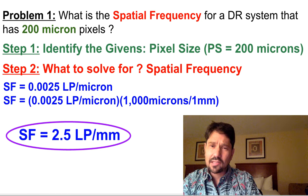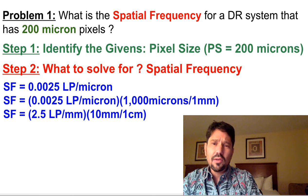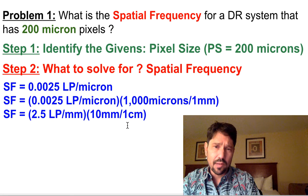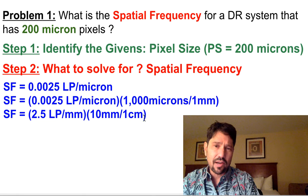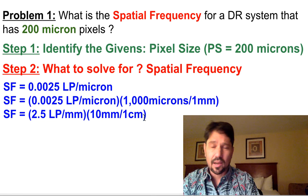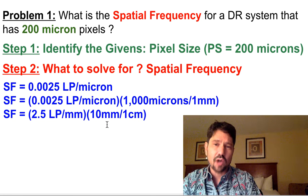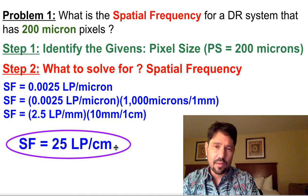Now, if they had asked for line pairs per centimeter, you could do a second conversion, and you could put millimeters in the numerator and centimeters in the denominator, and it's a ratio of 1, 10 millimeters and 1 centimeter. And so millimeters would drop out, and we'd get 25 line pairs per centimeter.